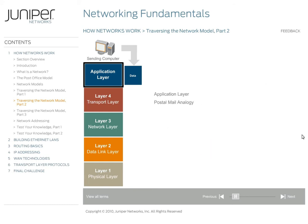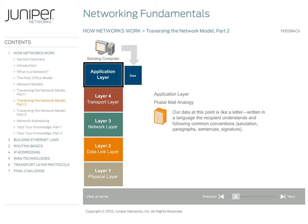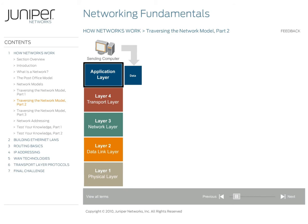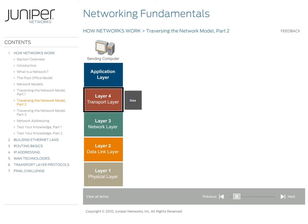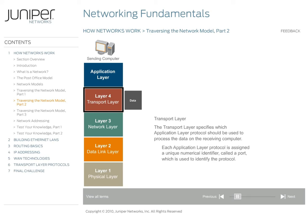Using our postal mail analogy, our data at this point is like a letter written in a language the recipient understands and following common conventions for letter writing. However, our data does not yet have an envelope specifying where it should be sent. The application layer sends the data down the stack to the transport layer. The transport layer specifies which application layer protocol should be used to process the data once it arrives on the receiving computer. Each application layer protocol is assigned a unique numerical identifier called a port.